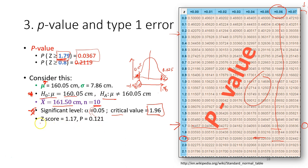After calculating the test statistic — which we will do in the next lecture — we get a z-score of 1.17. We can check this directly from the table to find the corresponding p-value. This p-value is much larger than our significance level.